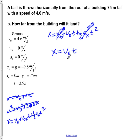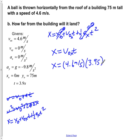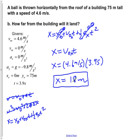This simplification makes it much easier to solve for the final position. Plugging in our values, V0x equals 4.6 meters per second and t equals 3.9 seconds — the time it takes for the object to fall and hit the ground. The horizontal distance covered in this time is approximately 18 meters.